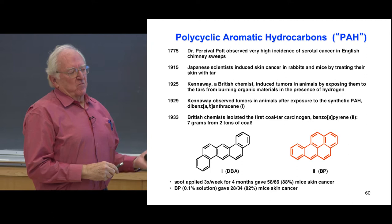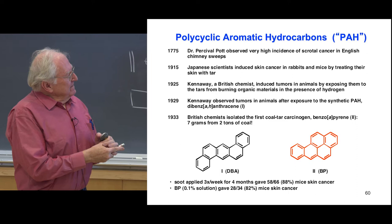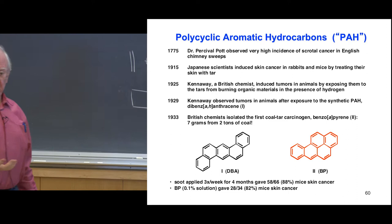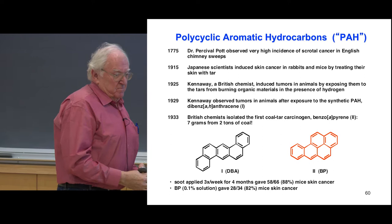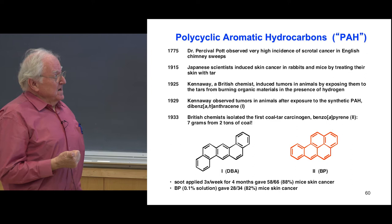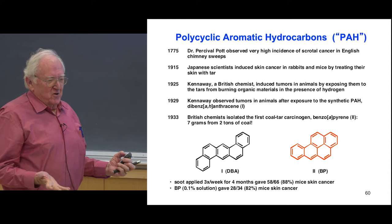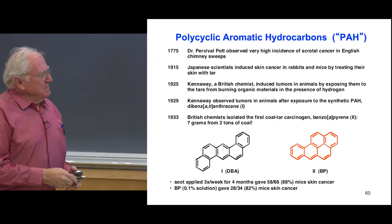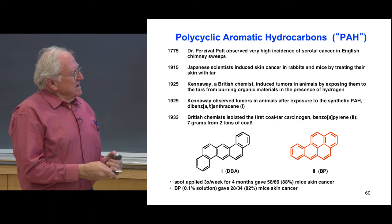It wasn't really developed until the Japanese in 1915 induced the same kinds of skin cancer in animals by putting tar on their skin. Then in 1925 in London, Kennaway induced the same kinds of cancers by burning organic material, making tars, and putting those on skin. Then Kennaway, in a major breakthrough in 1929, got the same kinds of cancers in animals using a synthetic hydrocarbon — dibenz anthracene. Anthracene has three benzene rings in a row; dibenz anthracene is two additional benzene rings, one on the A side and one on the H side.